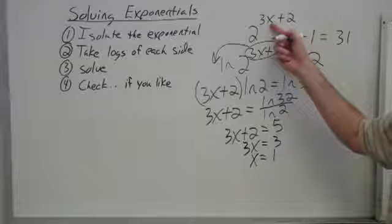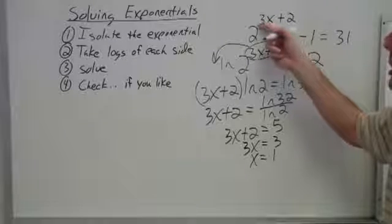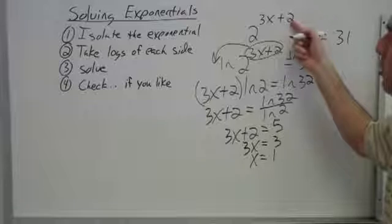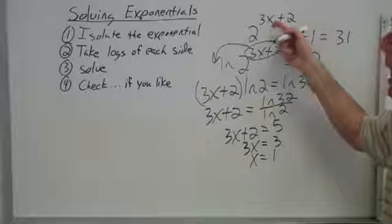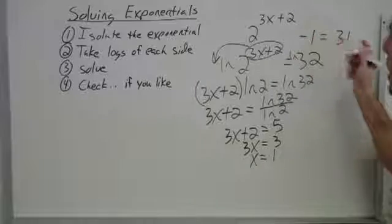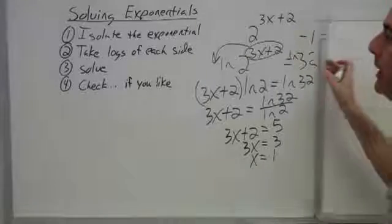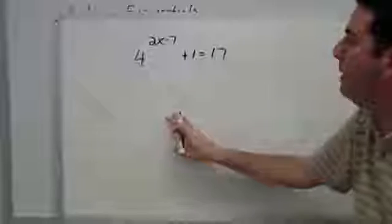If you put 1 in, you can see that it works. 3 times 1 made 3 plus 2 is 5. 2 to the 5th power made 32 and 32 minus 1 is 31. Let's try another and see what we can do with it.